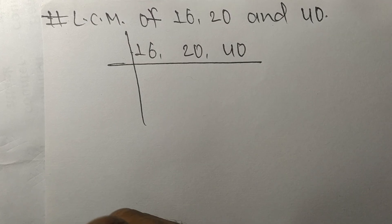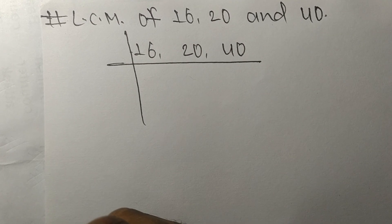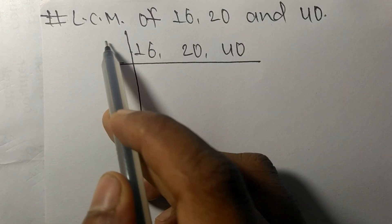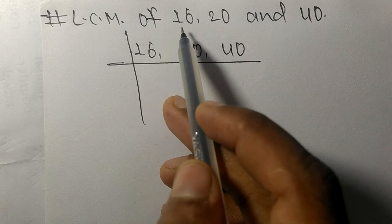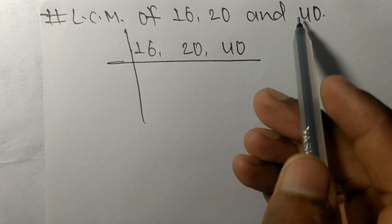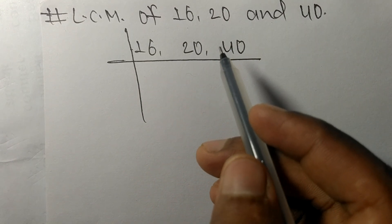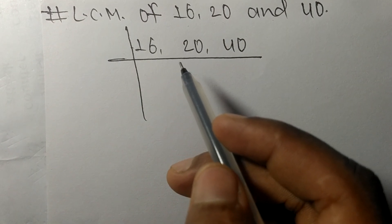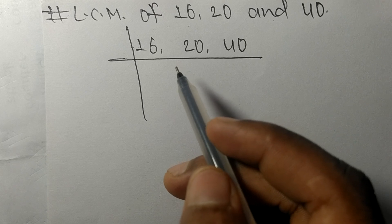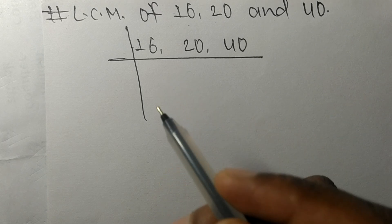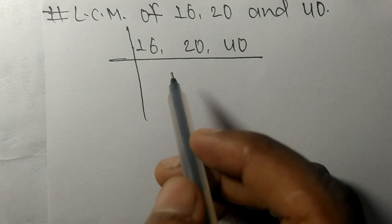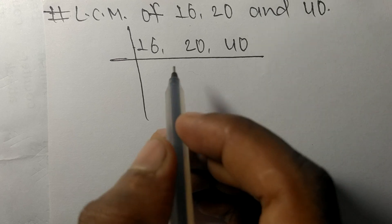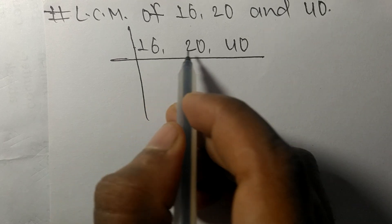Today in this video we shall learn to find the LCM of 16, 20, and 40. To find the LCM, we have to choose the lowest number that can exactly divide at least any two of these numbers.